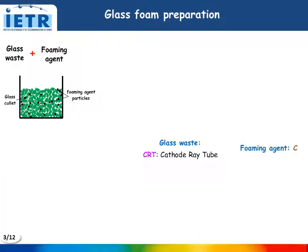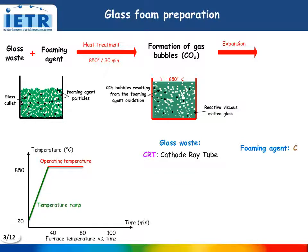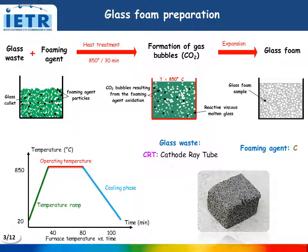For the foam glass elaboration, the glass waste is mixed with the foaming agent. This mixture is then heated following a three-step process: a temperature ramp followed by an operating temperature step, in which the glass becomes viscous and the foaming agent reacts with the glass waste to produce gas bubbles. The expansion and the cooling steps lead to the glass foam production.